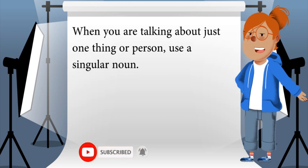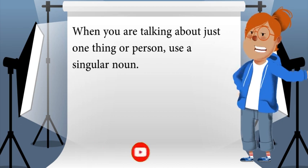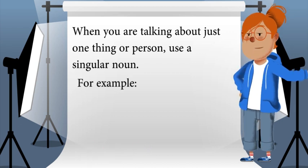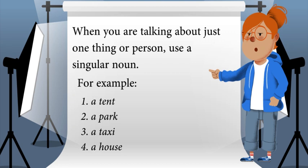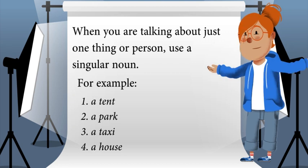When you are talking about just one thing or person, use a singular noun. For example: a tent, a park, a taxi, a house.